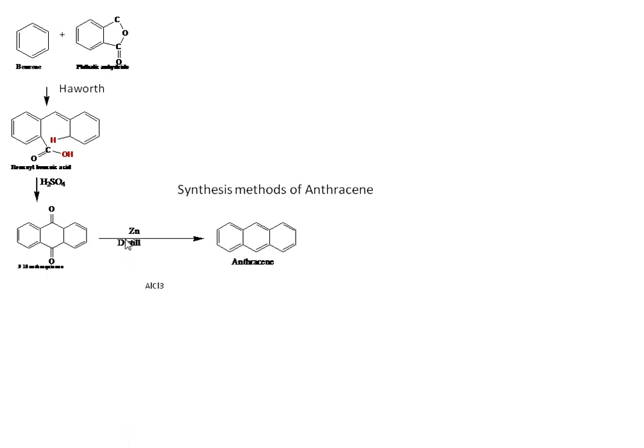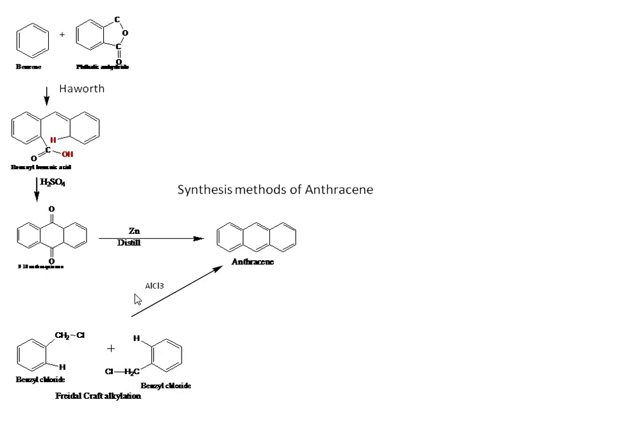A second method for anthracene synthesis is Friedel-Crafts alkylation, where two molecules of benzoyl chloride react in the presence of aluminum chloride to form anthracene.